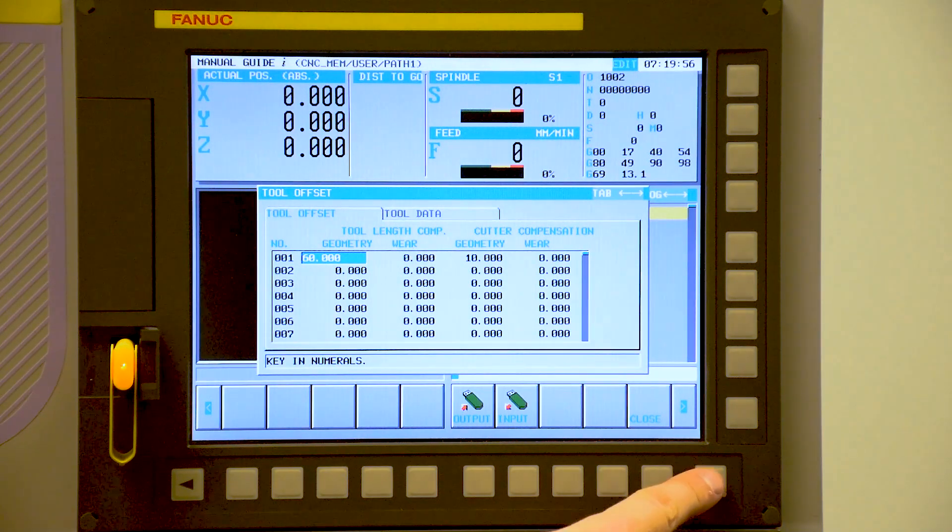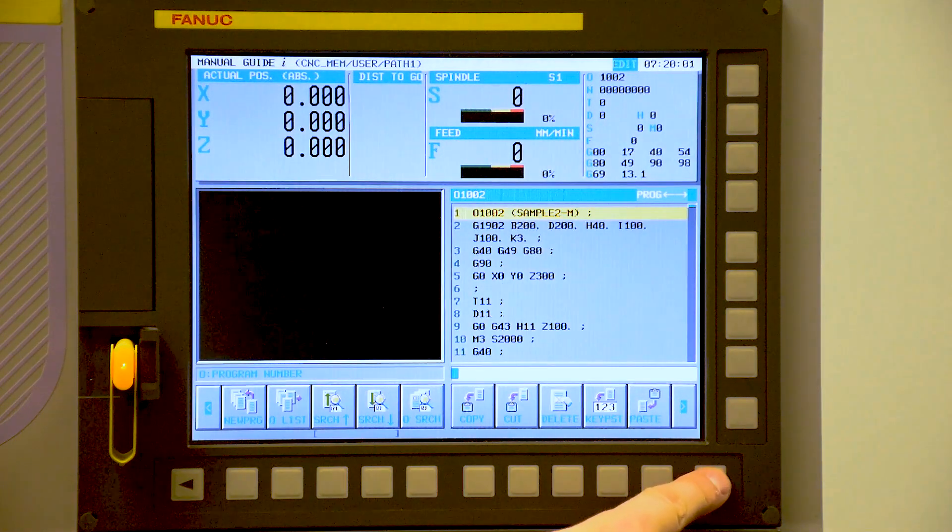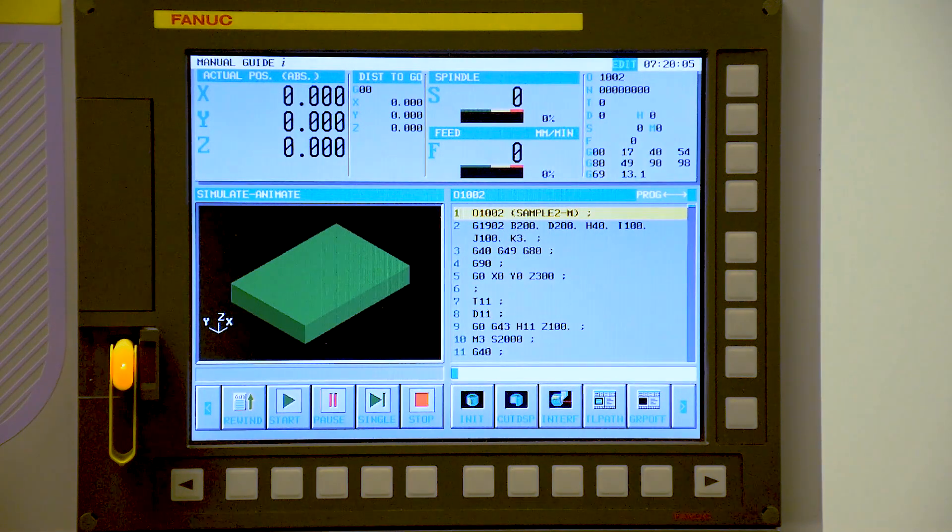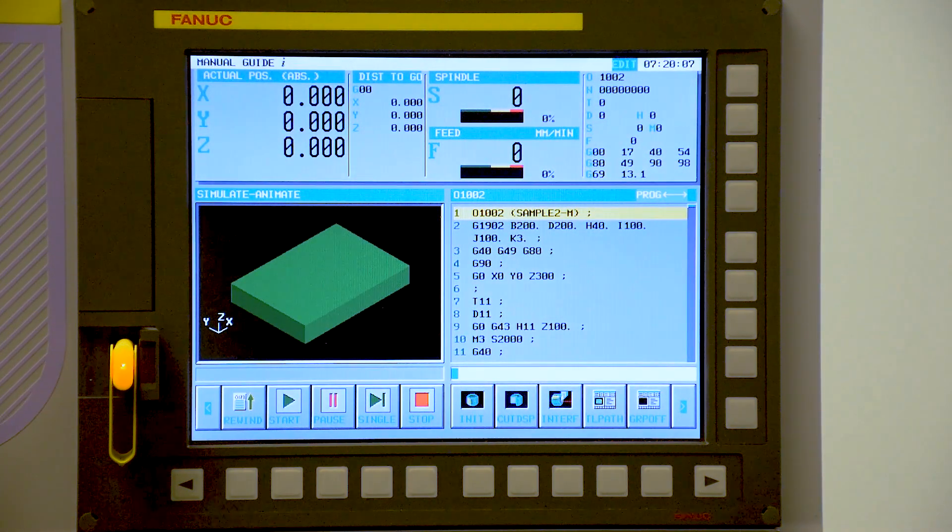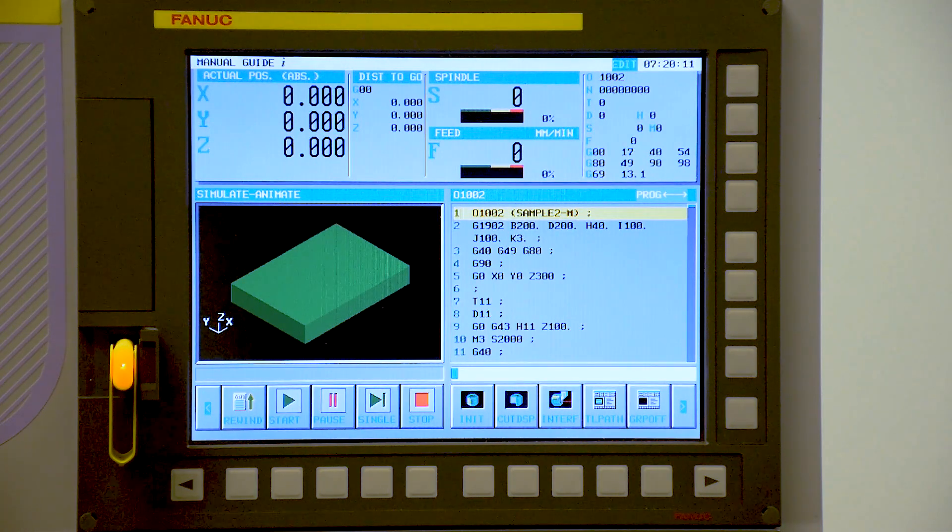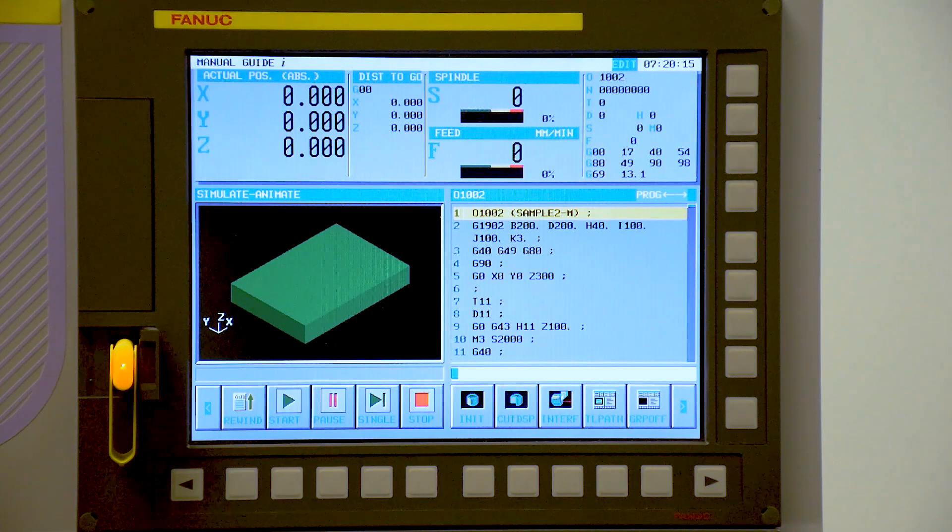If we then use the arrow to scroll across, you'll see a button here that says simulate. We press this, and the first line of this part program is a four digit G code which is essentially a cycle specific to Manual Guide Eye and it will define the blank material.